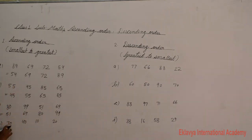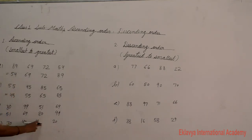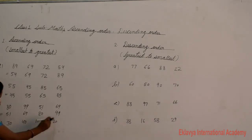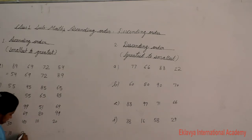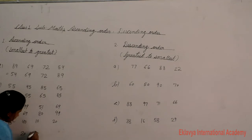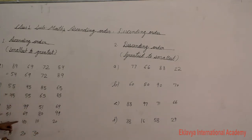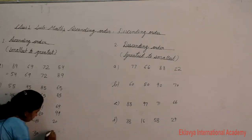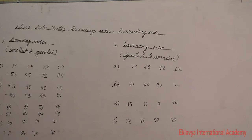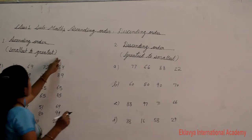Next example: 30, 40, 10, 20. The smallest number is 10. After 10 comes 20, after 20 comes 30, and after 30 comes 40.